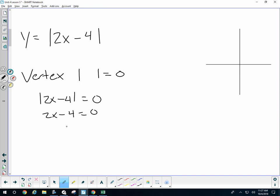I then can add 4, divide by 2, or just know that x equals 2. So my vertex will be located at x equals 2.